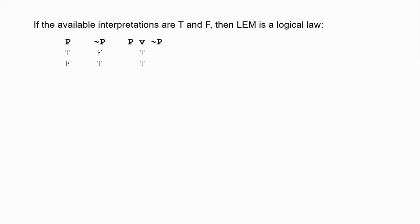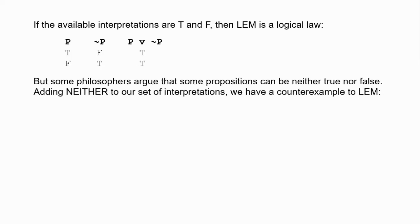There are many reasons for thinking some sentences are truth-value gaps — neither true nor false — based on empty terms, vagueness, future contingents, and so on. So we add the value 'neither' to our set of interpretations, and this gives us a counterexample to the law of excluded middle, assuming the interpretation of the connectives of strong Kleene logic. Expanding the set of interpretations, we can get a counterexample to the law of excluded middle.